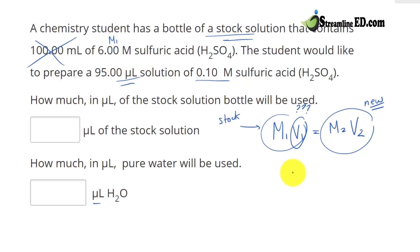You are always solving for V1. To do that, you just bring this over here. So M2 V2 divided by M1.